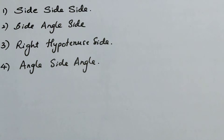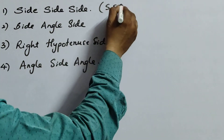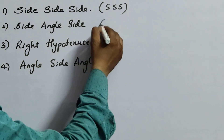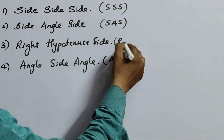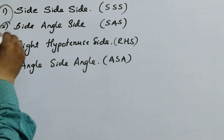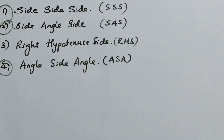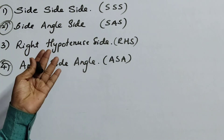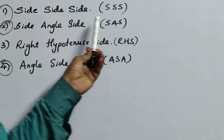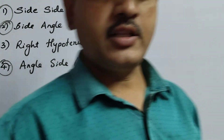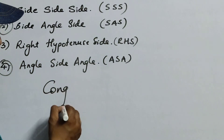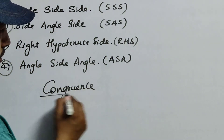Before learning about these properties, the very important topic you have to learn is congruence. What is the exact meaning of congruence? If you see a book in my hand, the same book with the same size and same shape — if you take another book and place it on this, they should overlap, meaning they should have same shape and same size. That is the exact meaning of congruency.